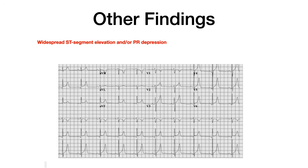The test writer might give you an ECG, which may demonstrate widespread ST segment elevation and/or PR segment depression. However, this is a buzzy word that people immediately jump to for pericarditis, so if I were the test writer and wanted to be challenging, I wouldn't give this to you. Just keep in mind it could show up, but it probably won't.